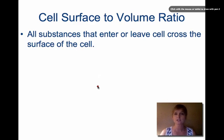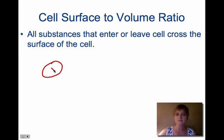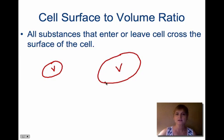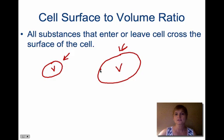We're going to talk about the cell surface-to-volume ratio. Because all substances that enter or leave the cell have to cross the surface of the cell, we talk about the surface-to-volume ratio. So if we have a small cell, it has a certain volume inside, and the surface area is this outer area. If we have a large cell, the volume inside is larger, and the outer part is the surface area. The ratio would be different: in the small cell, this surface area is larger than the volume, and that makes it more efficient. In a really large cell, this surface area is not as large compared to the volume inside, and so that makes it less efficient.